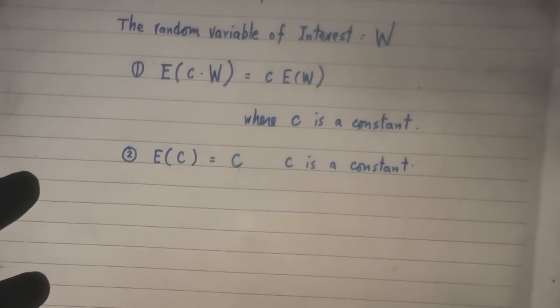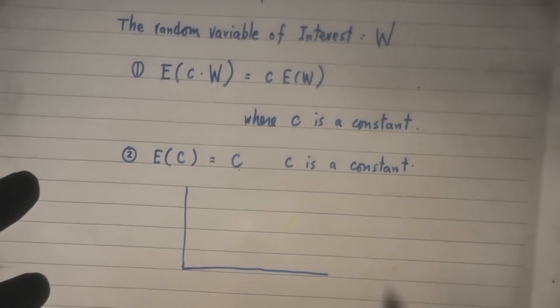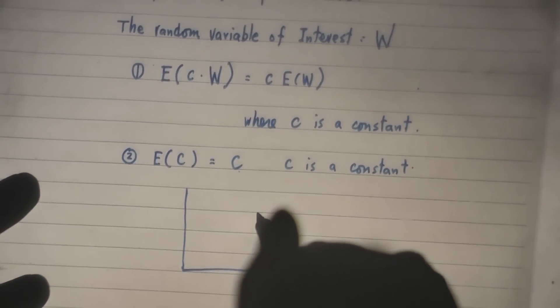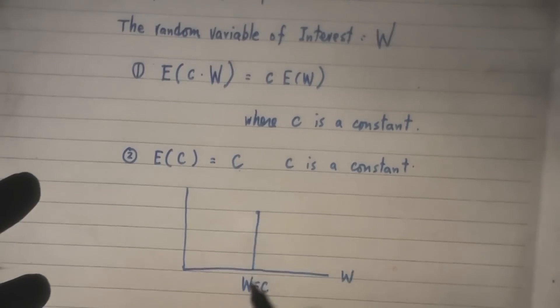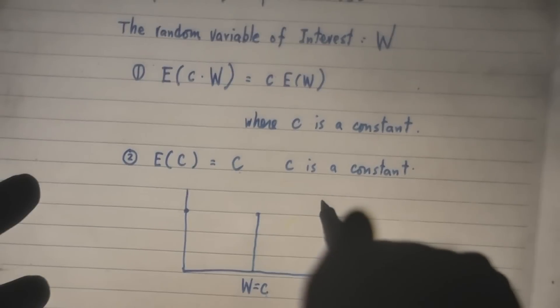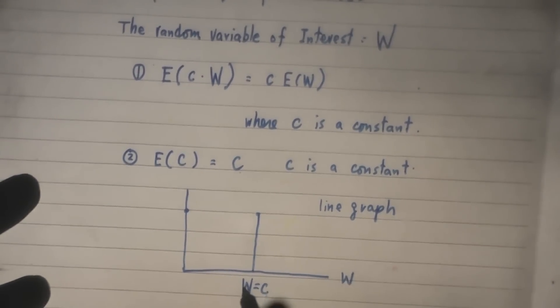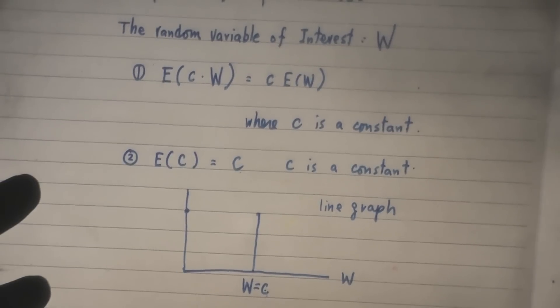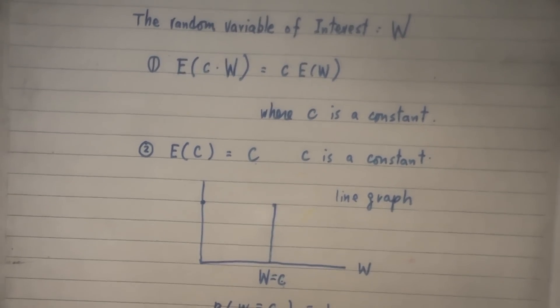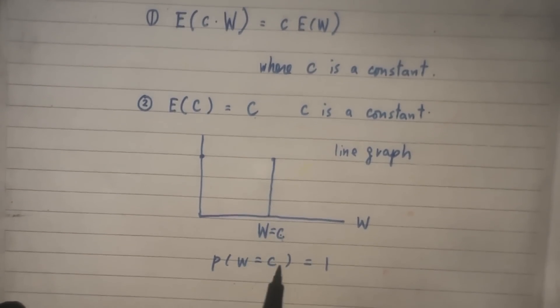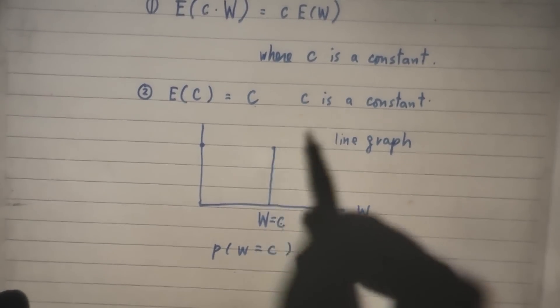And why is that? Let's look at this picture. Say this is W. And here, W equal to C. W equal to C, this is a line graph. W equal to C is what? Probability W equal to C is one. What does that mean? That means there is only one possible number for variable W. So, this is one.